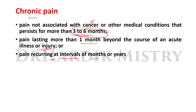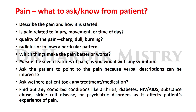To summarize, the three characteristic features of chronic pain are: pain not associated with cancer that persists more than three to six months; pain lasting more than one month following the course of an acute illness or injury; and pain recurring at intervals of months or years.